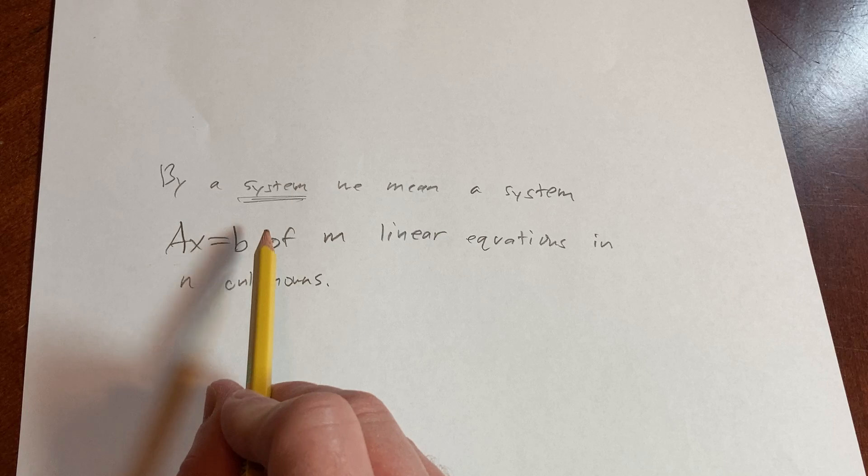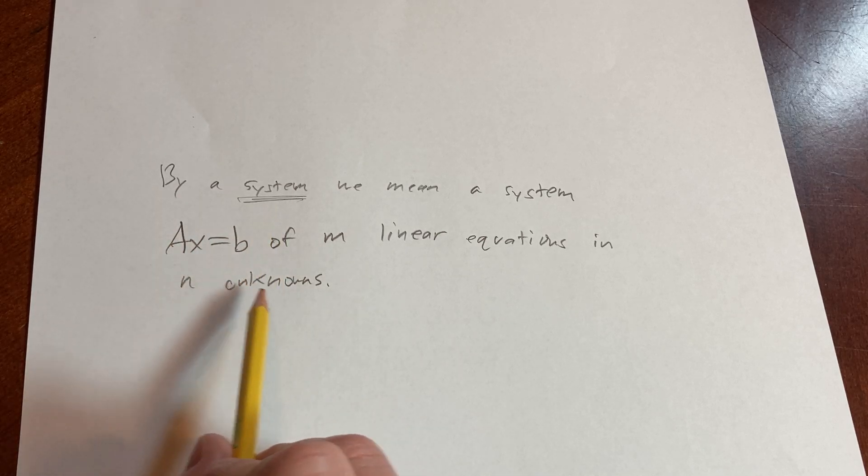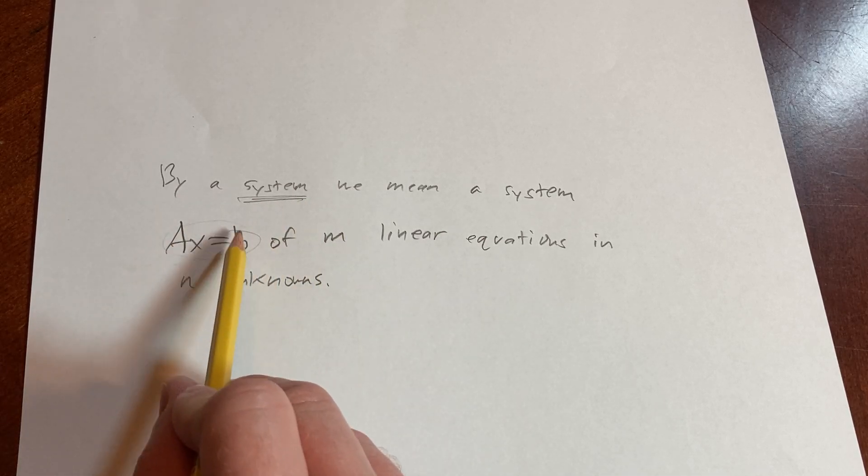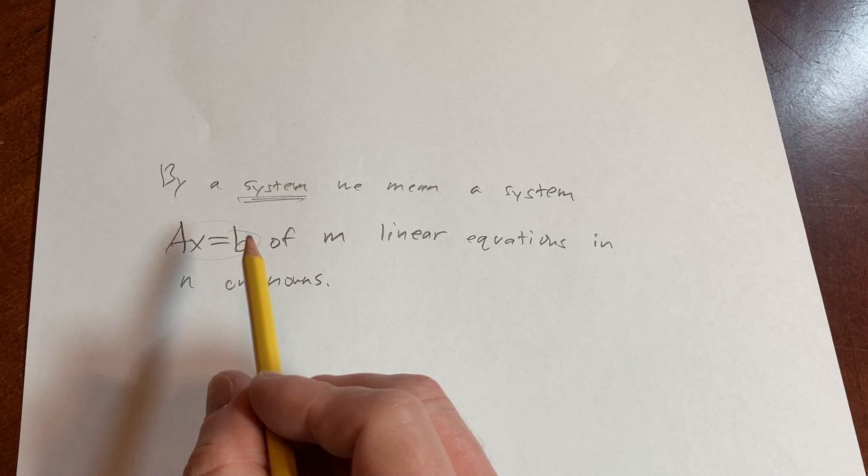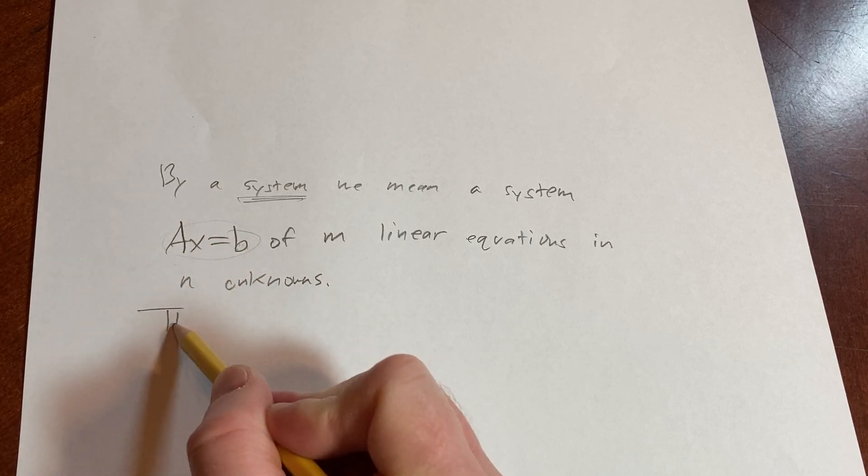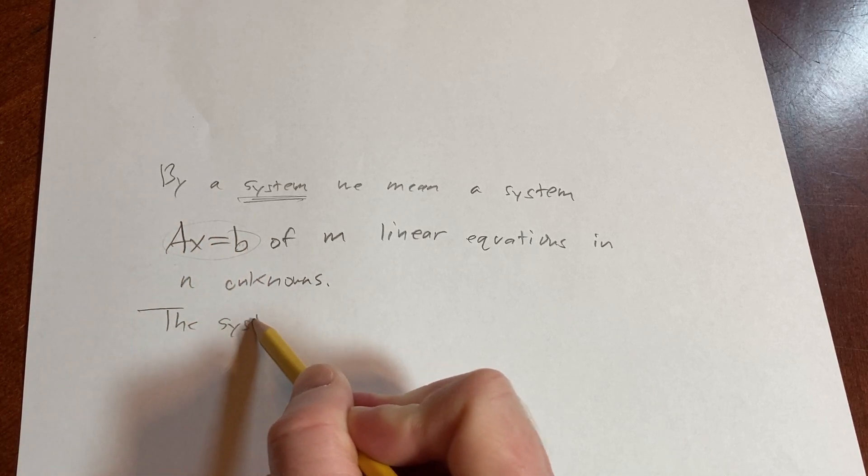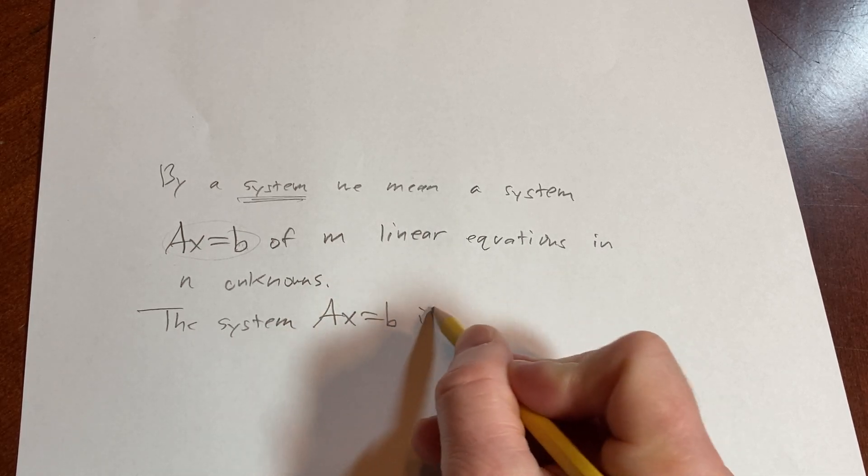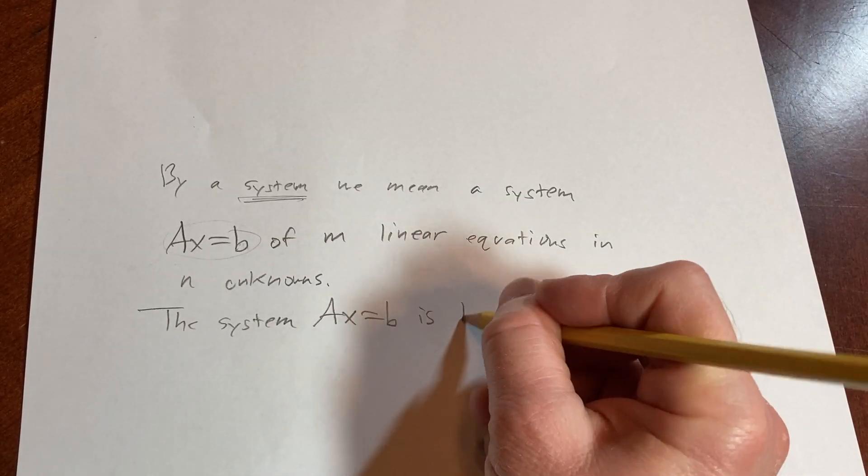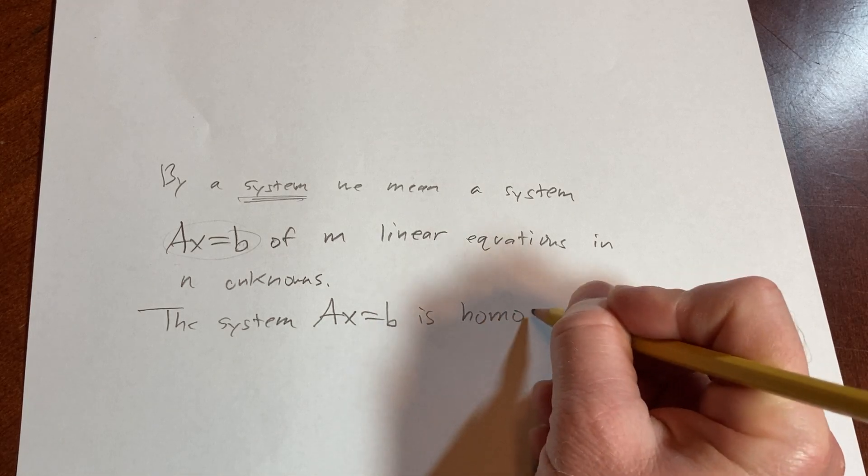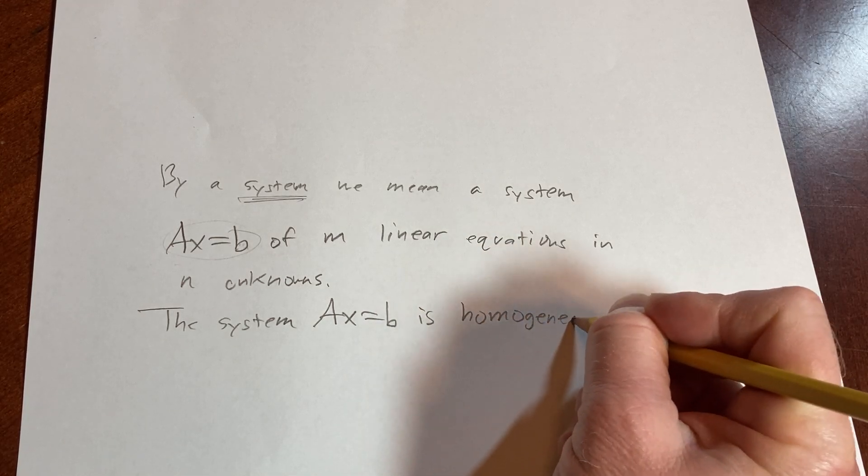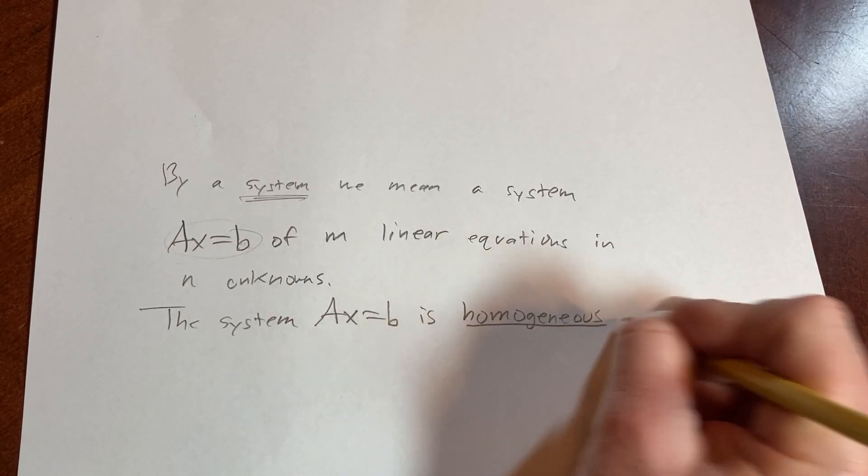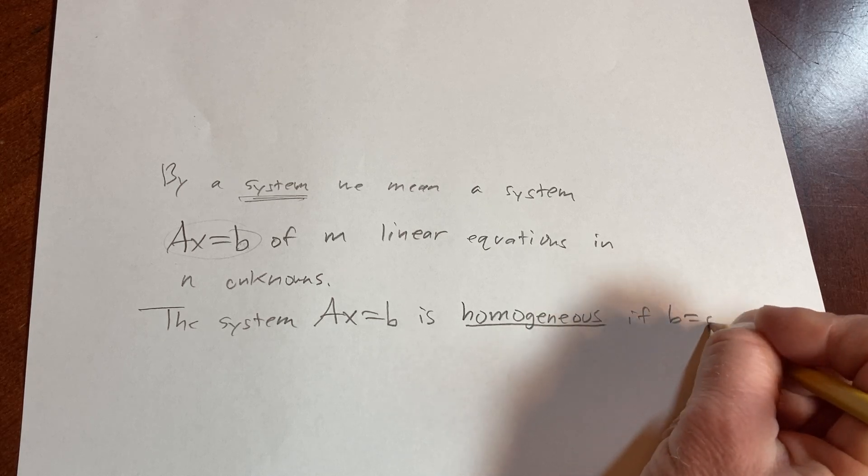What we're going to talk about in this video is a homogeneous system. So basically this system here is going to be homogeneous if B is equal to zero. The system AX equals B is homogeneous if B equals zero.